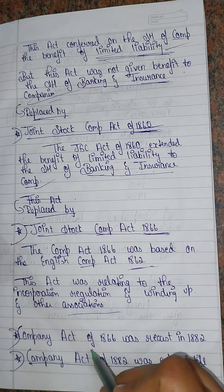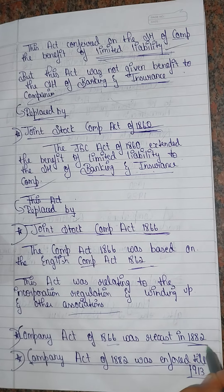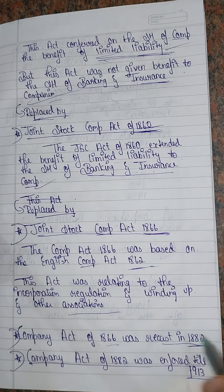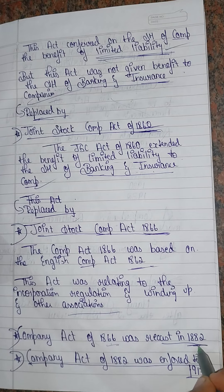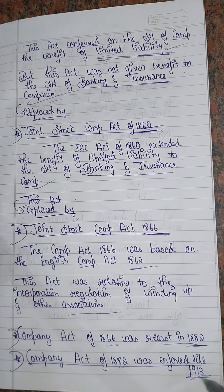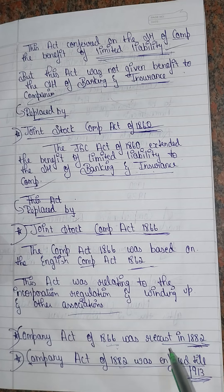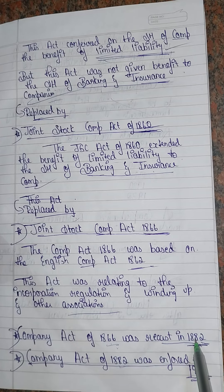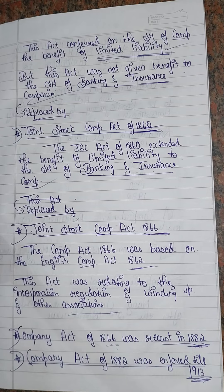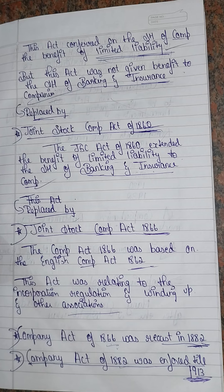The Companies Act 1866 was recast in 1882. The Companies Act 1882 was enforced in 1913, so it was declared in 1882 but its existence or enforcement started in 1913.